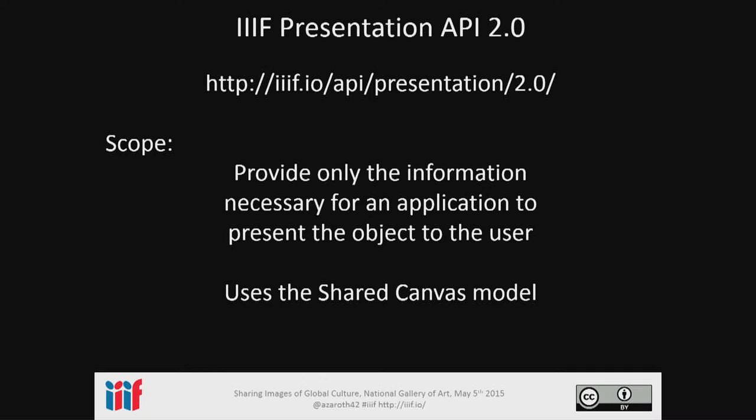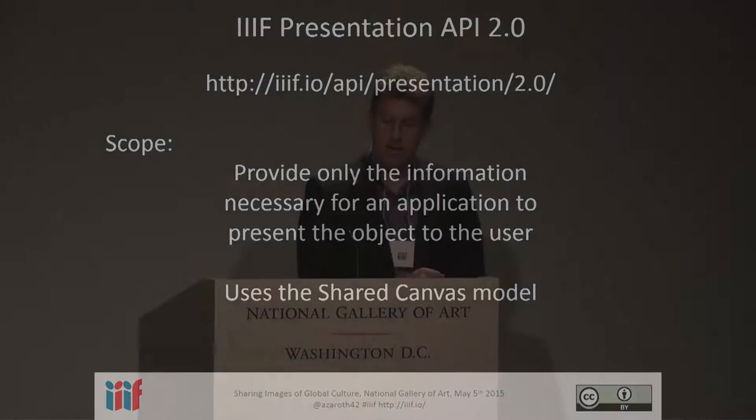The Presentation API is not a traditional metadata standard, of which the cultural heritage community has many hundreds. Instead, our scope is to provide only the information necessary for an application — such as Mirador or the Universal Viewer or anything else that will come along in the future — to present a particular object to a user so that they can see and understand that object. If you are of the technical mindset, the URI there is the full spec that you could look at later.